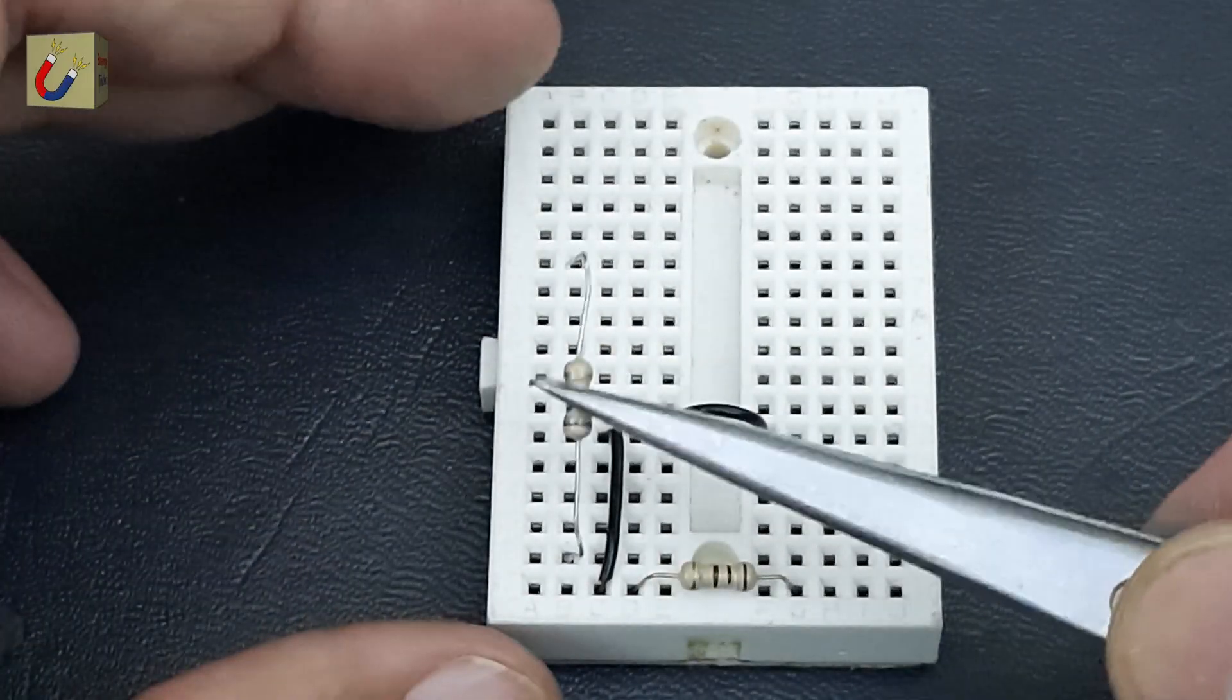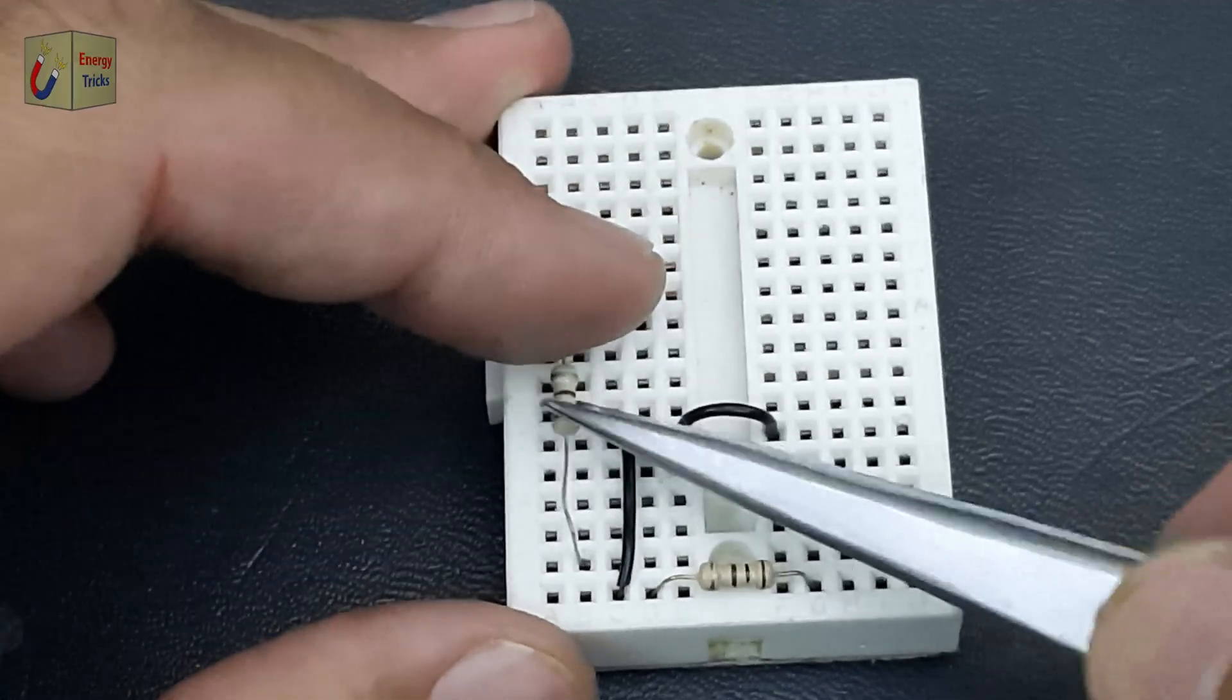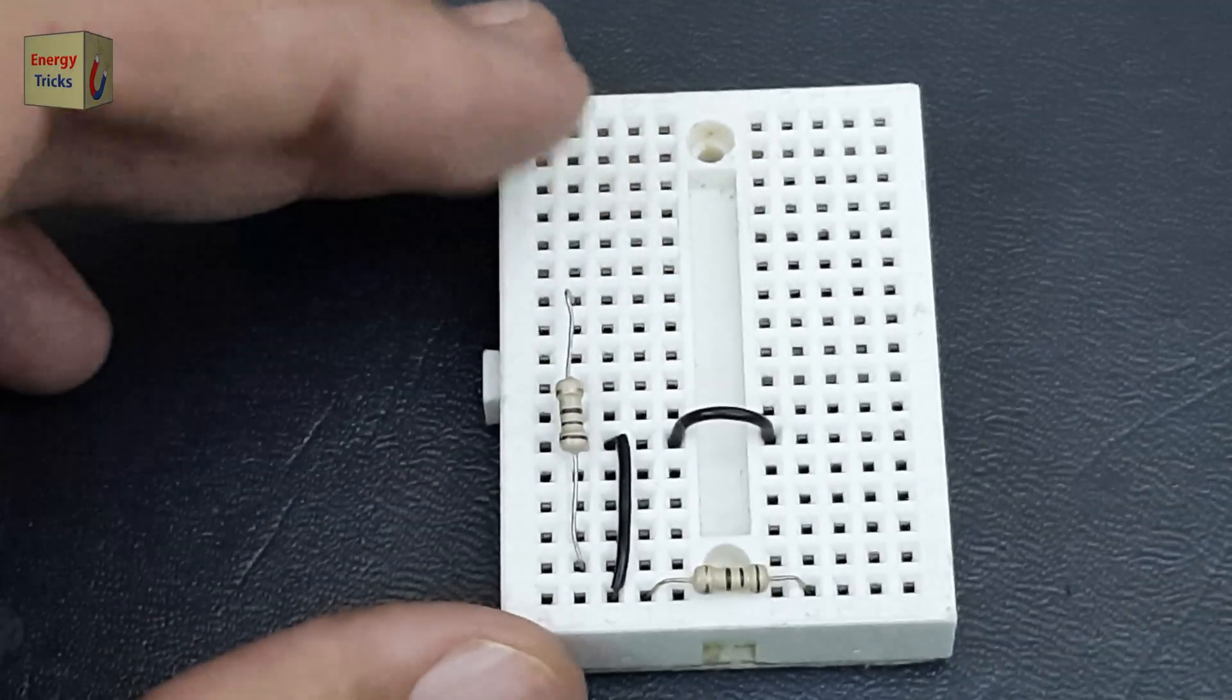Insert a 100-ohm resistor into the breadboard, ensuring it is securely seated with its legs spanning two different rows.